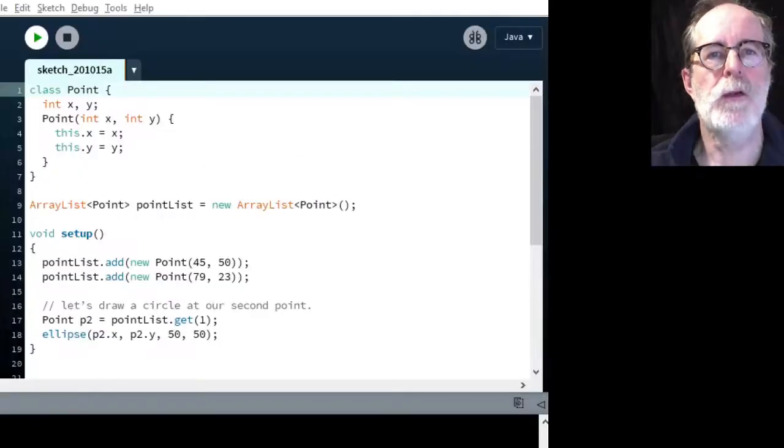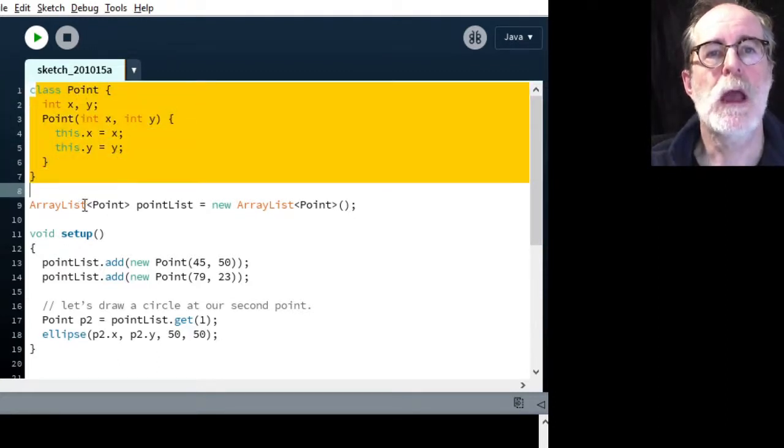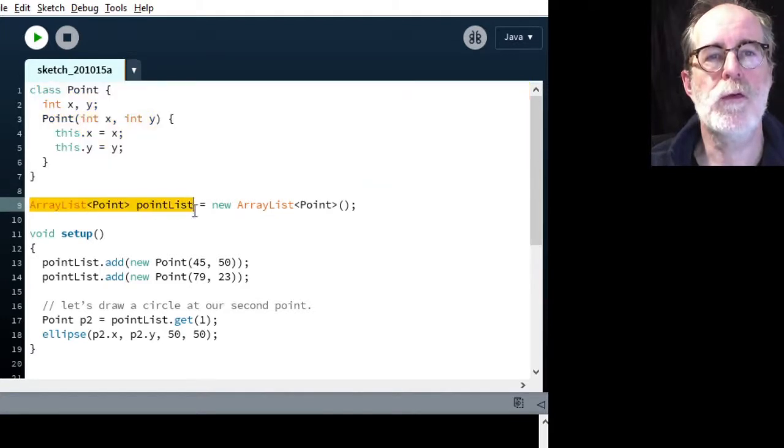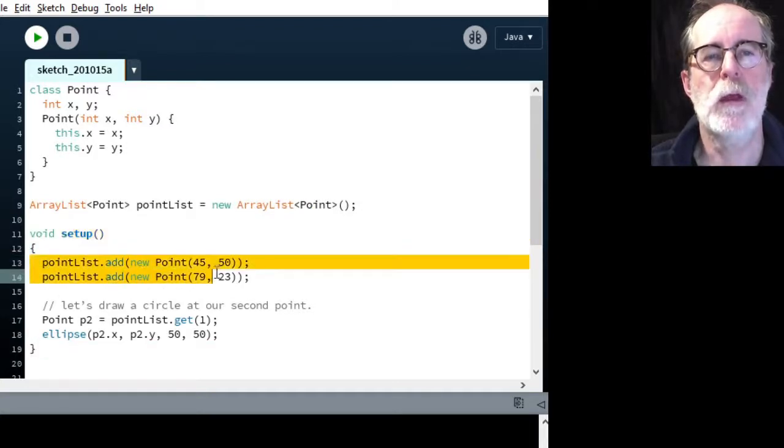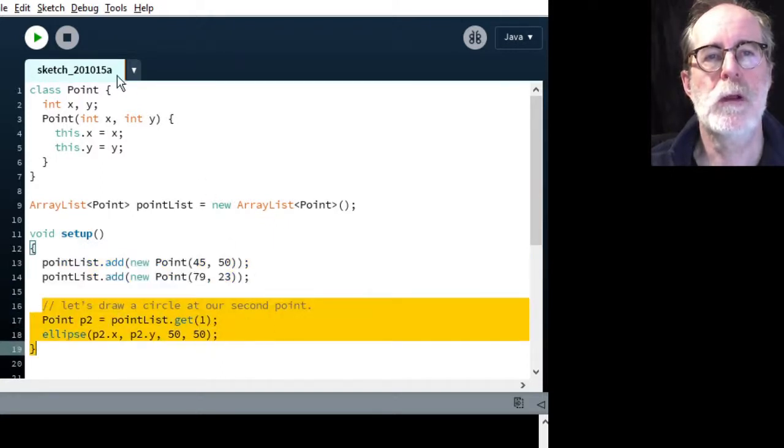So here we have ArrayList point. So we're telling what type it is that we need to be stored in the ArrayList. The name of that variable is PointList equals new ArrayList point. A snippet of code here that won't exactly work as you see it, but it's just intended to be drawn here in order to draw your attention to what the basics are. PointList.add new point 45, 50, PointList.add new point 79, 23. So those are things that will be at good locations in the standard processing little drawing window. And if we were to then call at the appropriate location in the code, drawing a circle at our second point, we'd do P2 to create a variable with that. PointList.get number one, and we could draw this ellipse here.